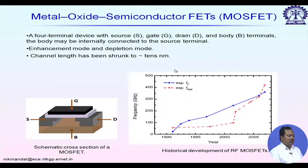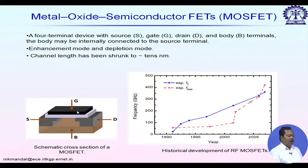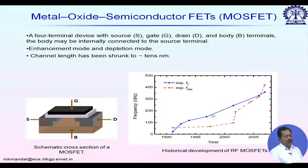A typical MOSFET device has a body at the bottom, source and drain regions above it, a thin oxide layer over that, and a gate made of metal or polysilicon on top of the oxide. Looking at frequency versus f_T and f_max, in recent years conventional MOSFETs have been developed with f_T values as high as 500 to 600 GHz.